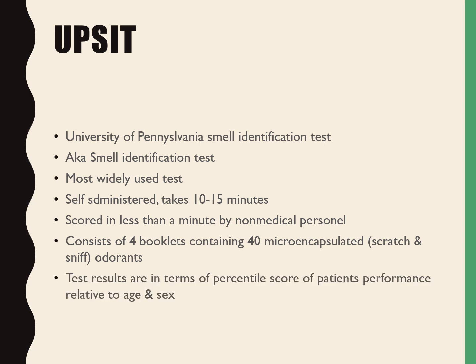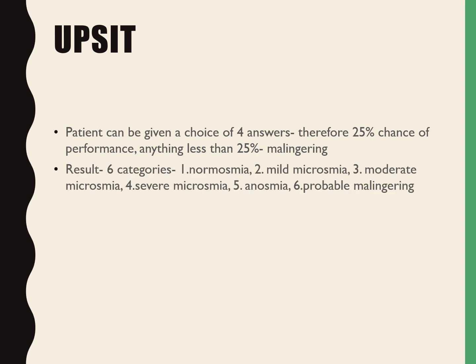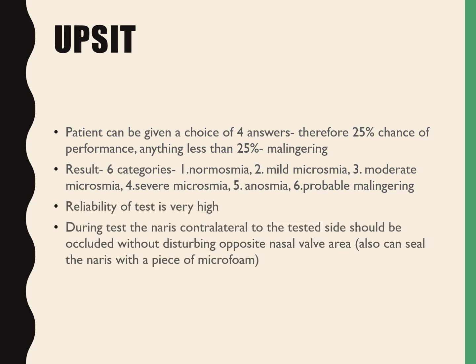The test results are expressed as a percentile score of the patient's performance related to age and sex. The patient is given a choice of four answers, giving a 25% chance of correct performance by chance, and anything less than 25% suggests malingering. Results are categorized into six categories: normosmia, mild microsmia, moderate microsmia, severe microsmia, anosmia, and probable malingering. Reliability of the test is very high.